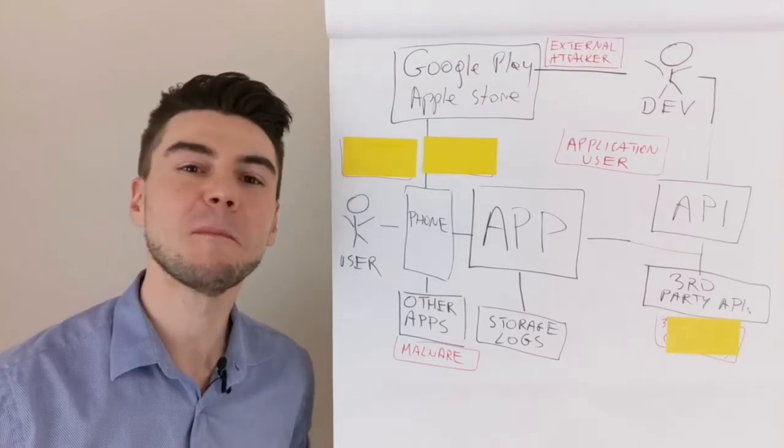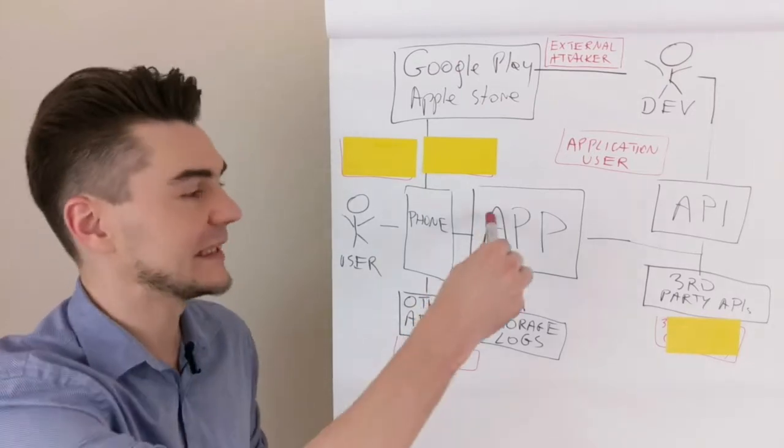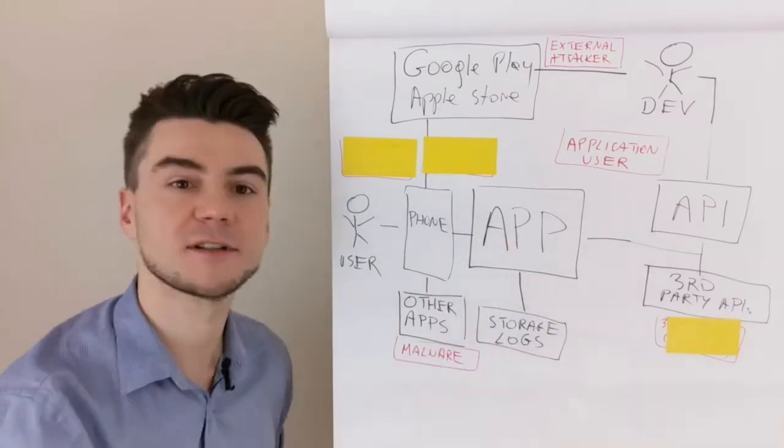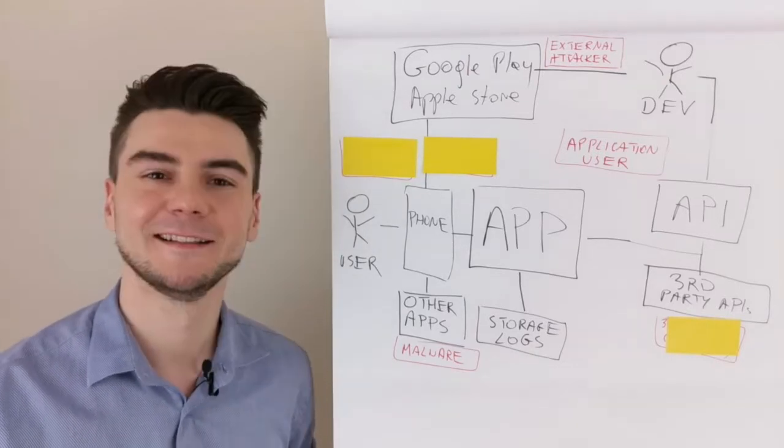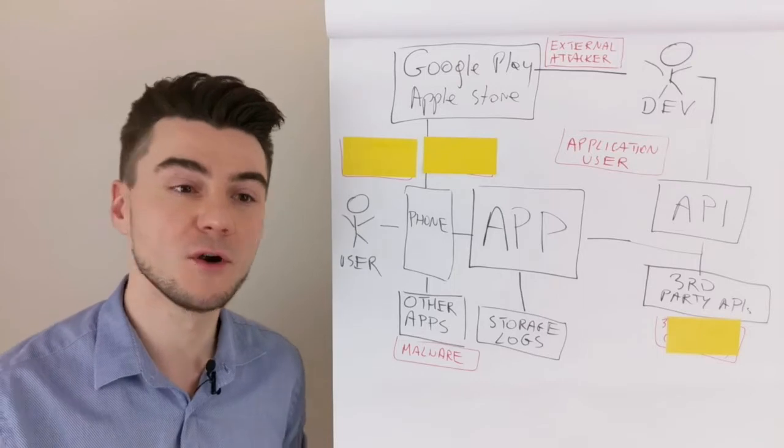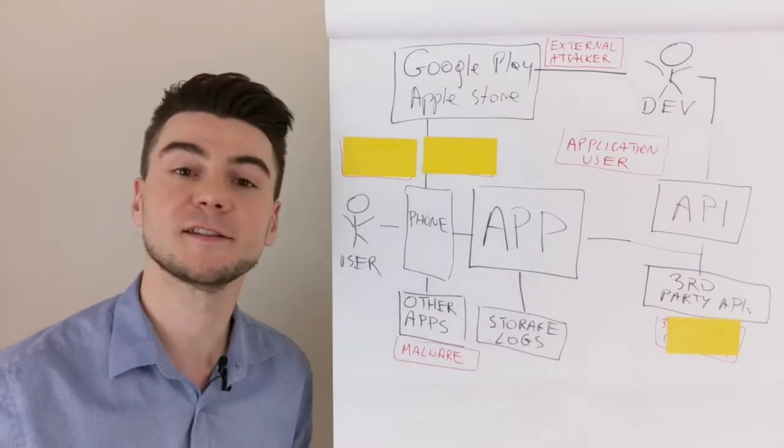Now, if malware is another application on the very same phone, it can try to access the storage and the logs of the original application. It will try to access the shared memory and also invoke the original application via insecure IPCs.